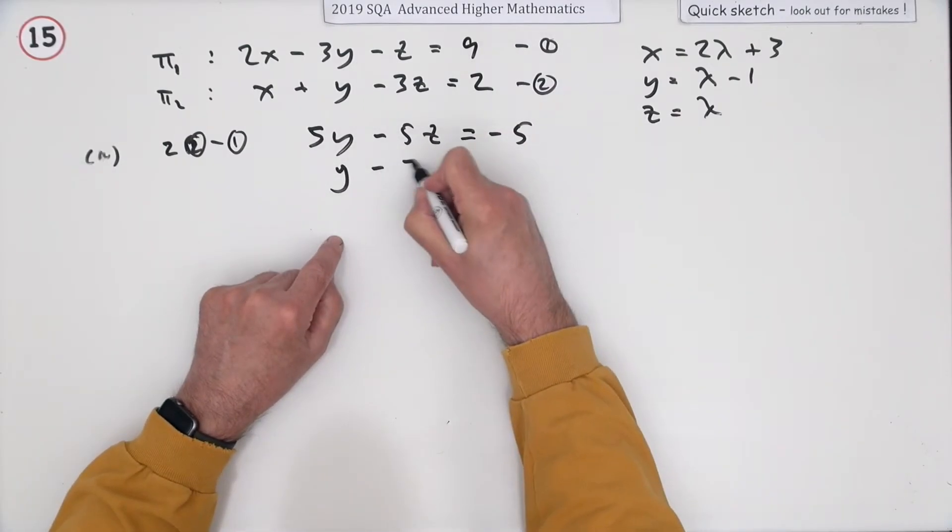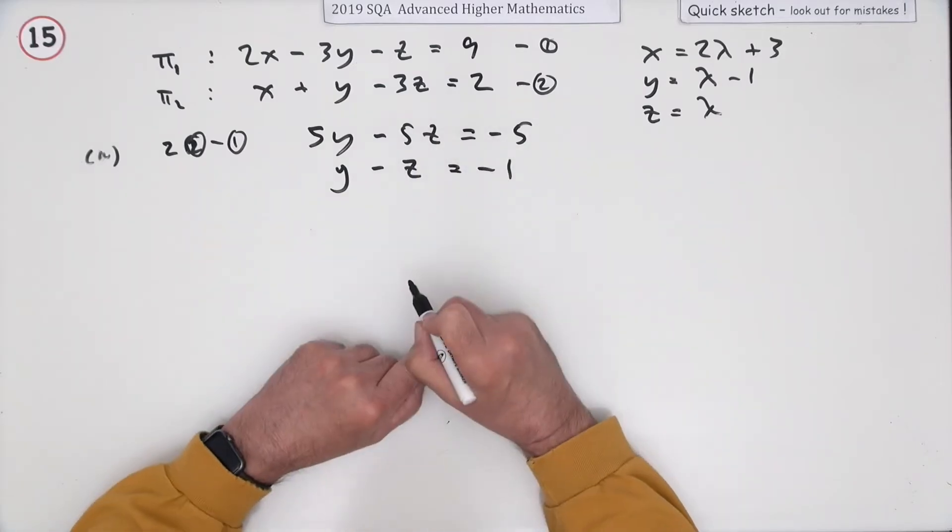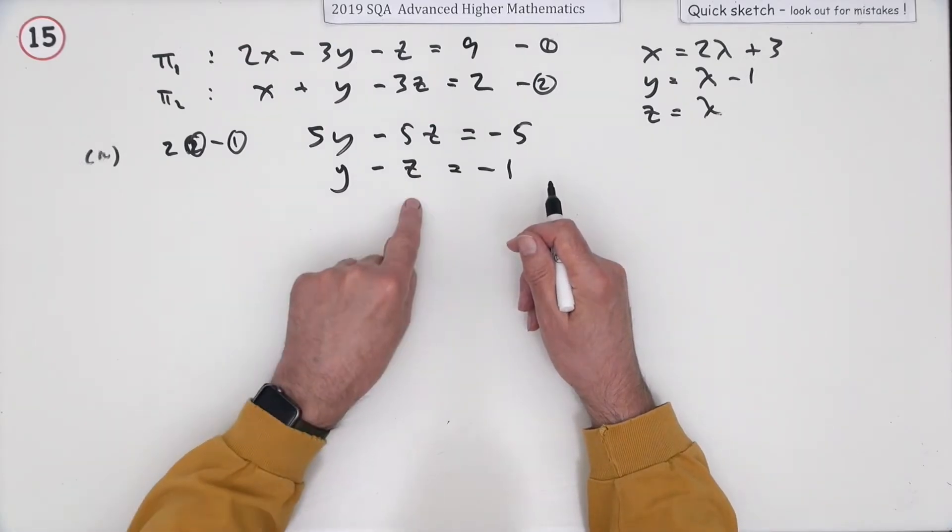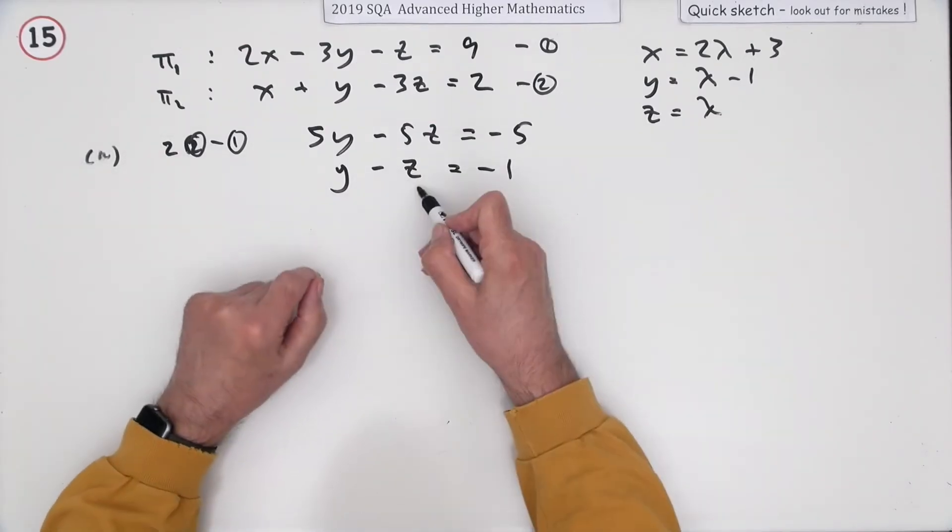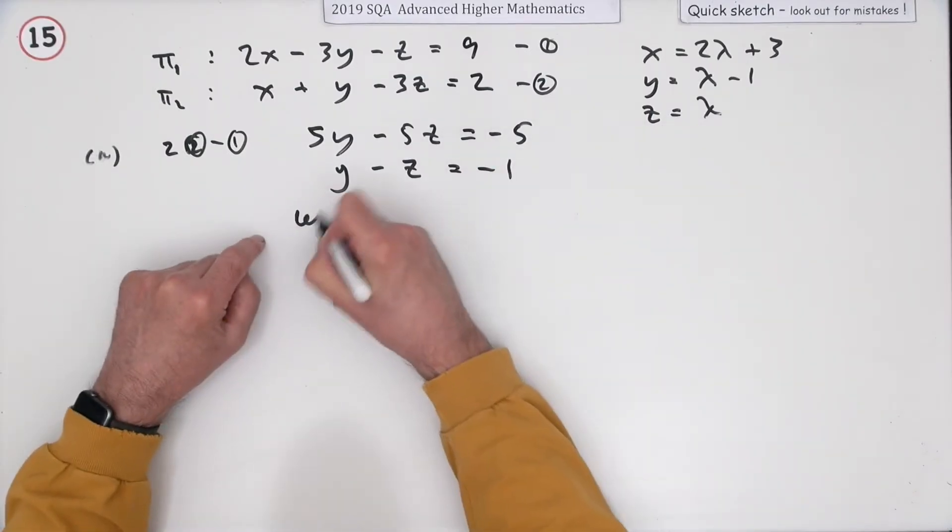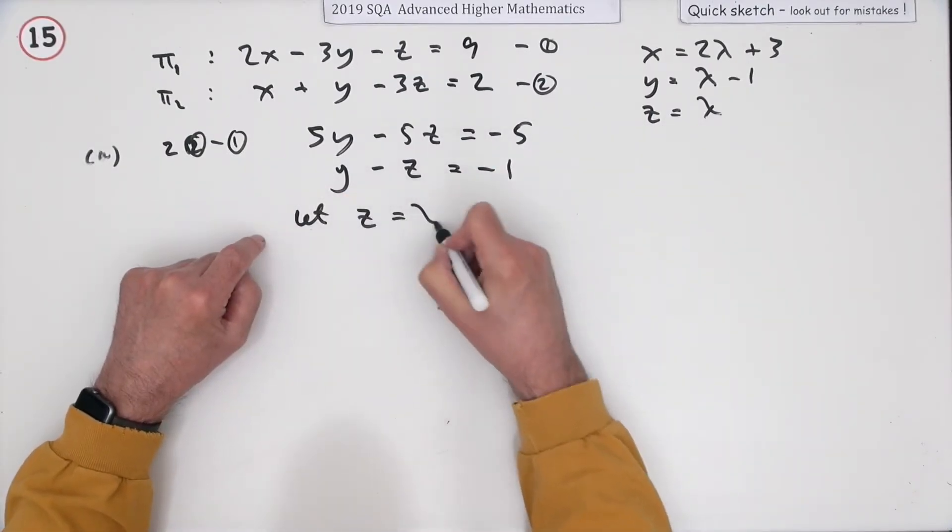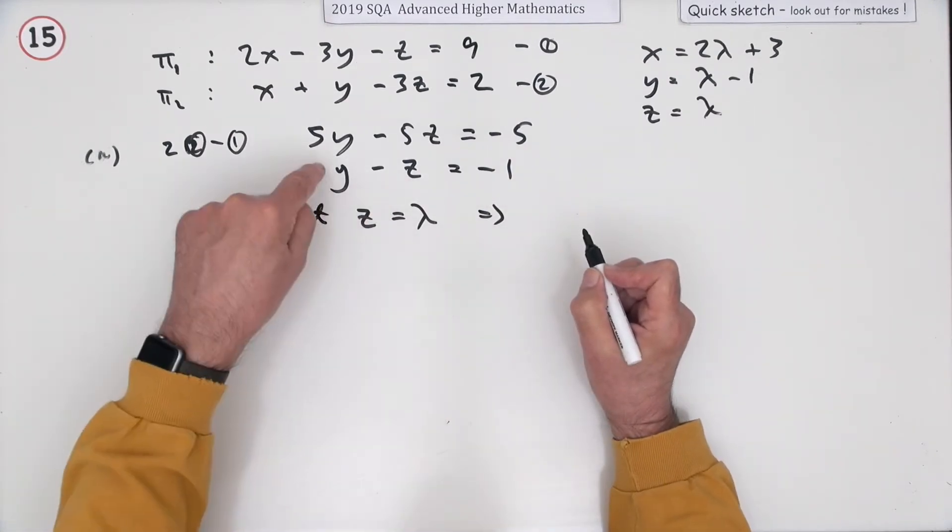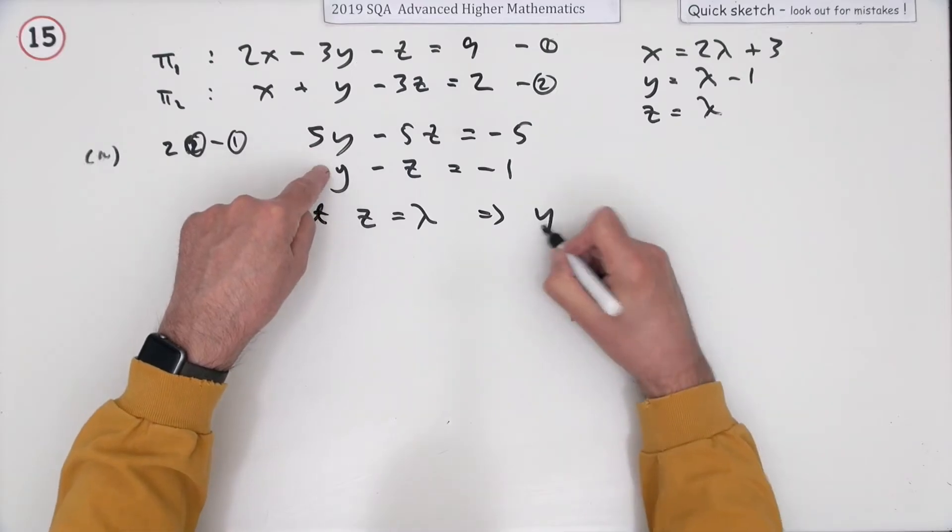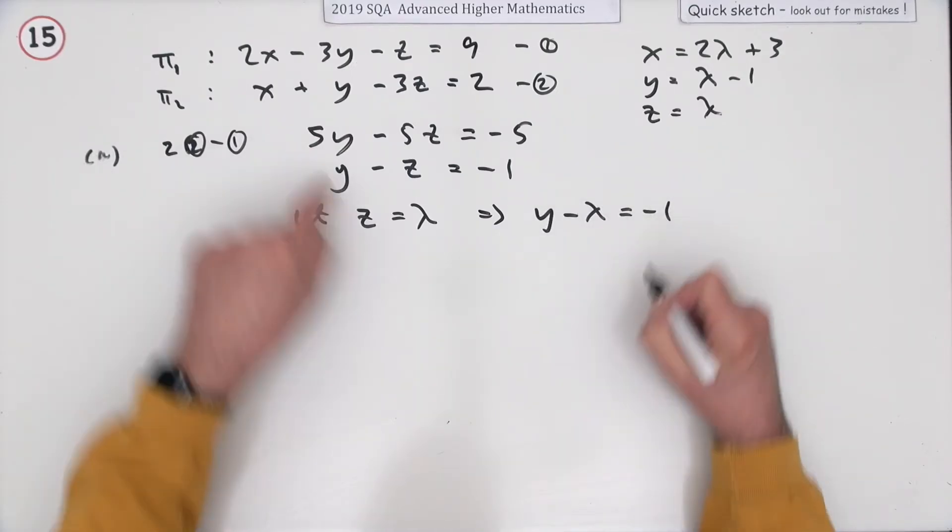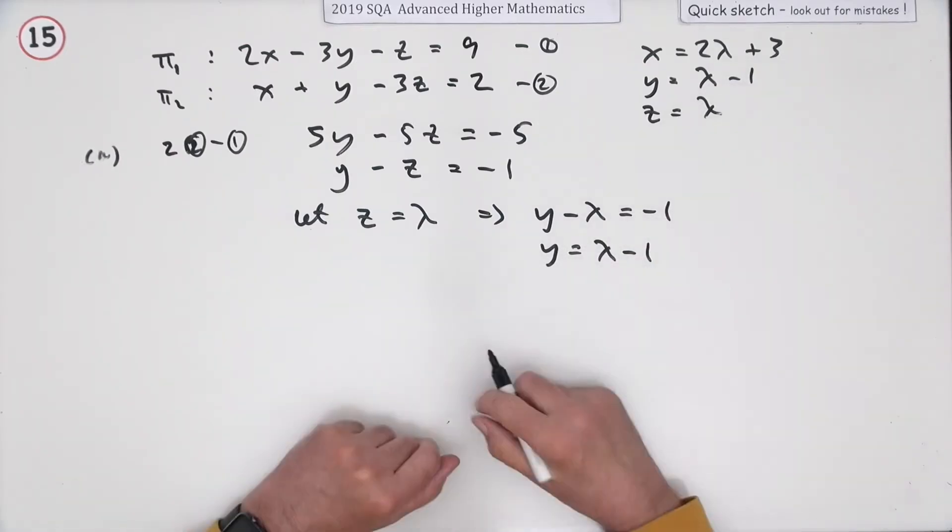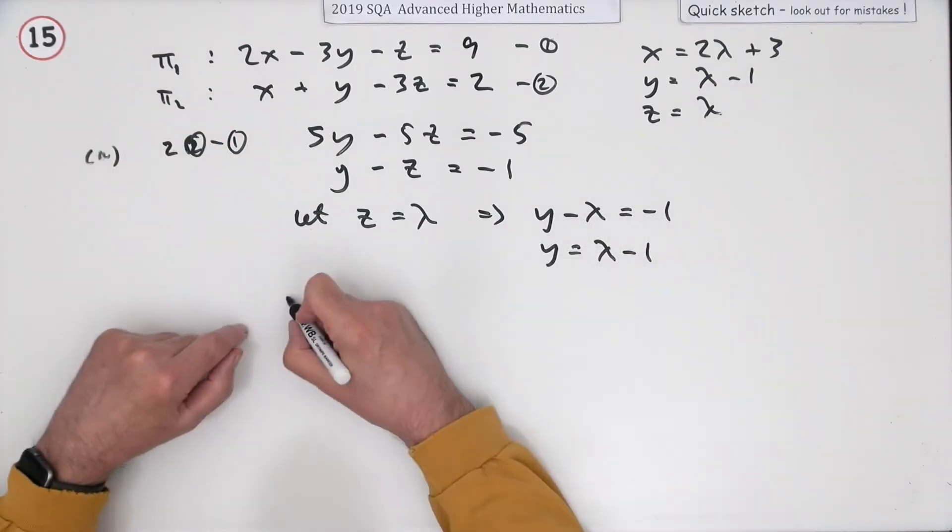I'll just tidy that up. Y minus Z is negative 1. Now, that's why there's no particular solution, because you've got two variables. So, you choose one to be free, and that's the one they've chosen. Let Z equal lambda, because as soon as you let Z equal lambda, or have a particular value, Y is tied to it. That means that Y minus lambda is negative 1, which means Y equals lambda minus 1. There's the first one.